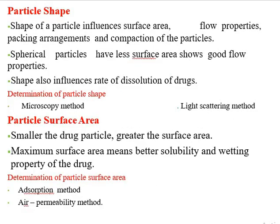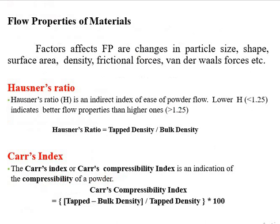Particle shape influences surface area, flow properties, packing arrangements, and compaction. Spherical particles have less surface area and show good flow properties; shape also influences the rate of dissolution. Methods to determine particle shape include microscopy and light scattering. Regarding particle surface area, smaller particles have greater surface area, which means better solubility and wetting properties up to an extent. Methods to determine particle surface area include adsorption methods and air permeability methods.